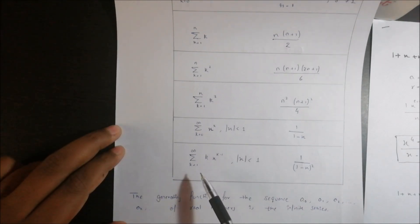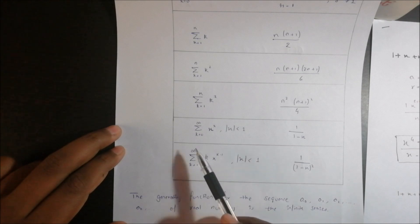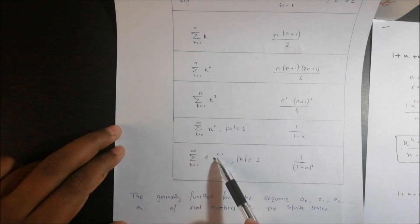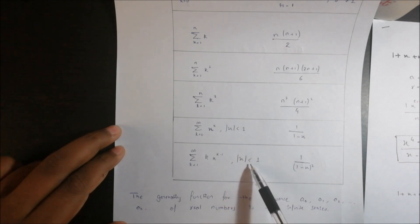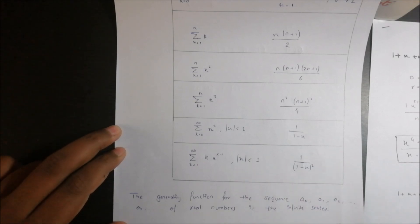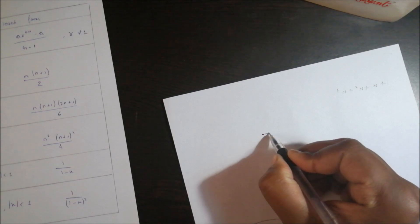Moving on to the last formula: summation of k equals 1 to infinity of k·x^(k-1), where the value of x is less than 1. The closed form is 1 upon (1 minus x)².